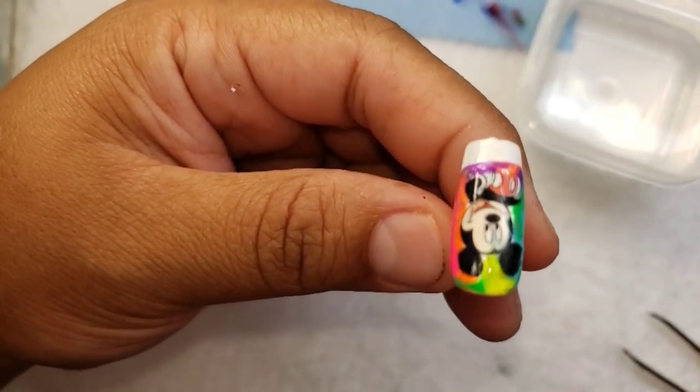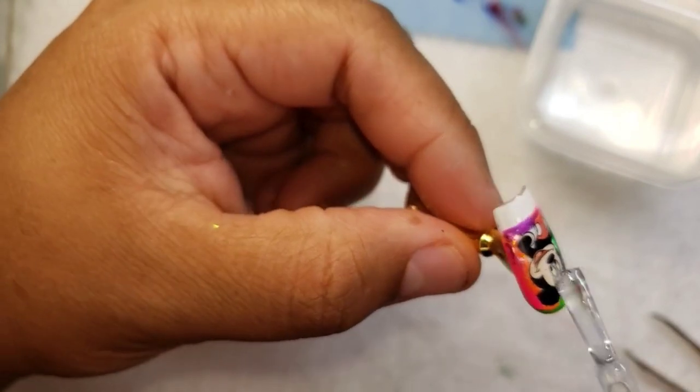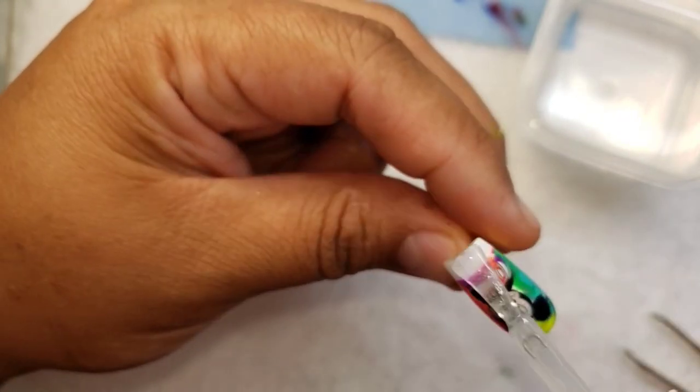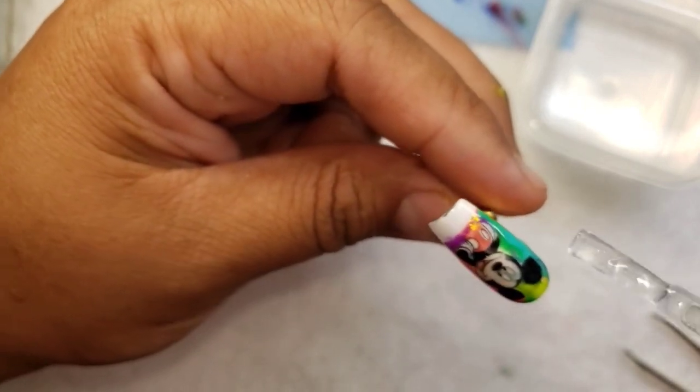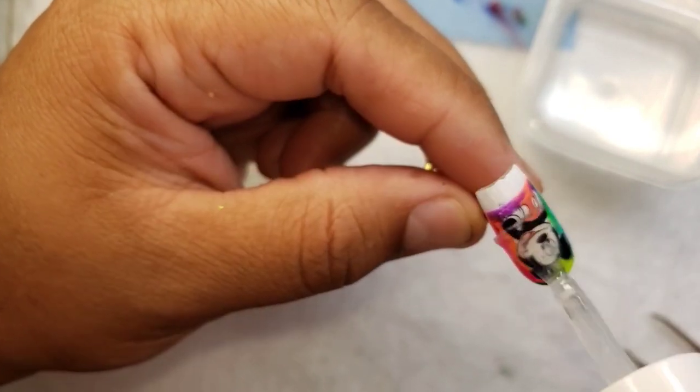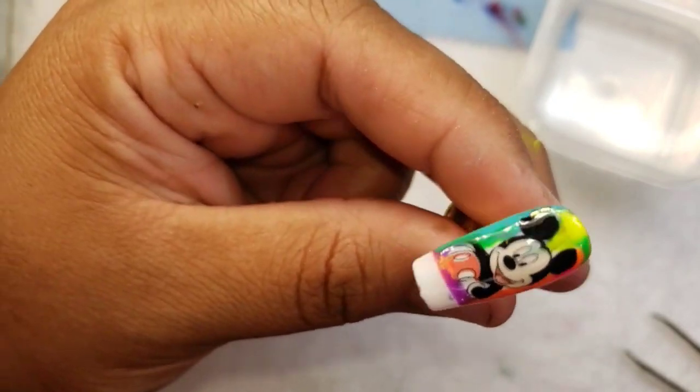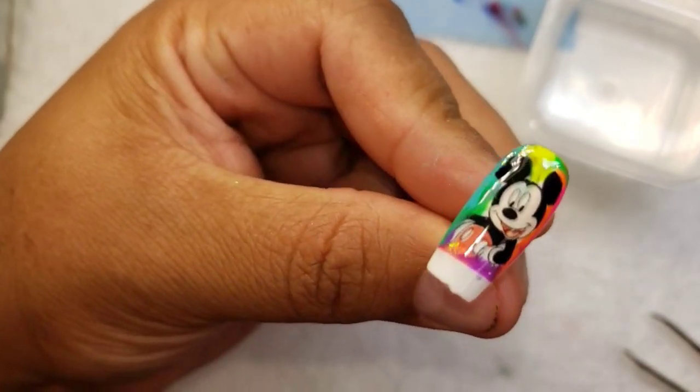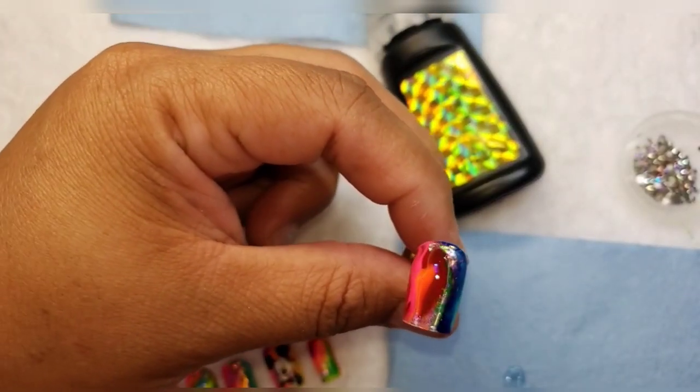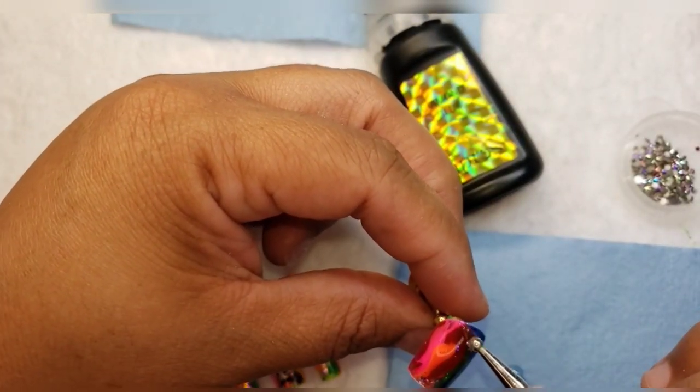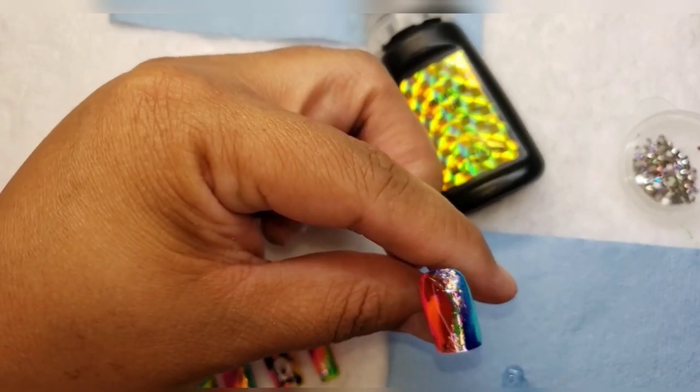I'm also going to be adding some rhinestones with the diamond glue, and I will list all of the items I used in the description.